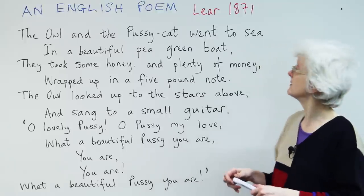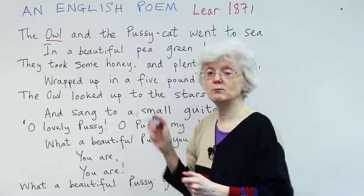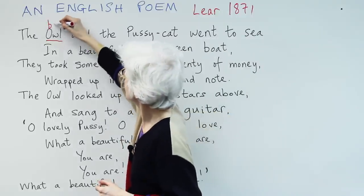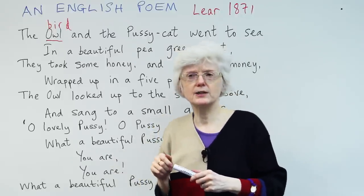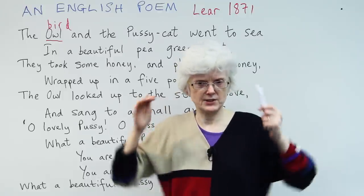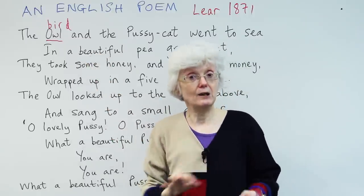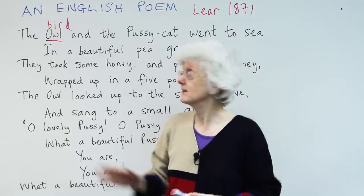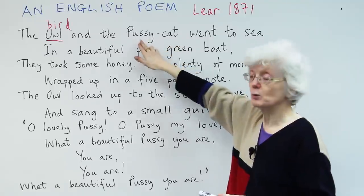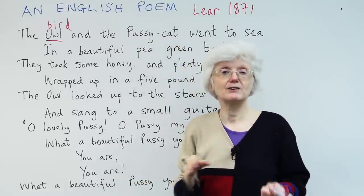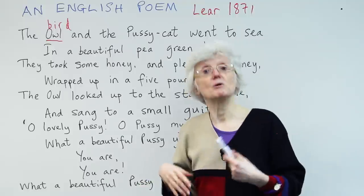The owl and the pussycat went to sea. Now, the owl — do you know what an owl is? You probably know what a bird is — a bird that flies. Well, an owl is the kind of bird that is awake at night. It has big, round eyes. If you look it up on Google Images, you'll see lots of pictures of owls. So we have a bird here, an owl, and a pussycat. I'm sure you know what a cat is.